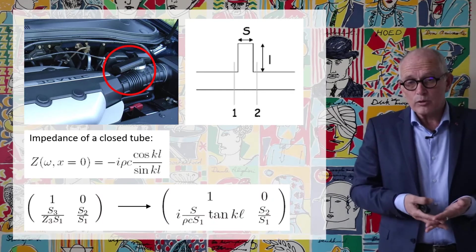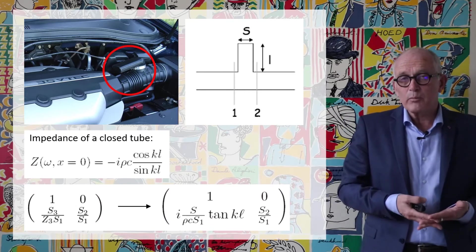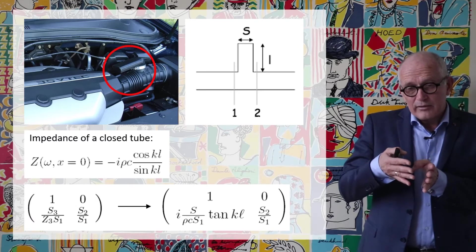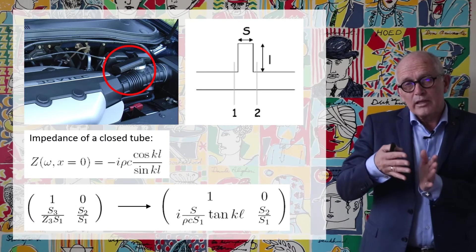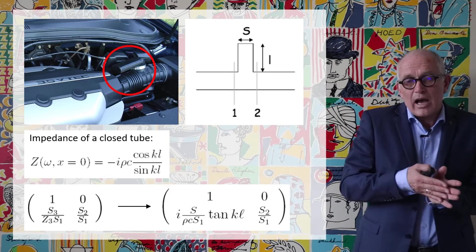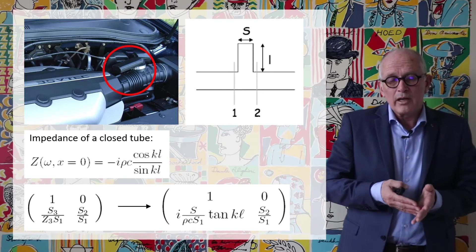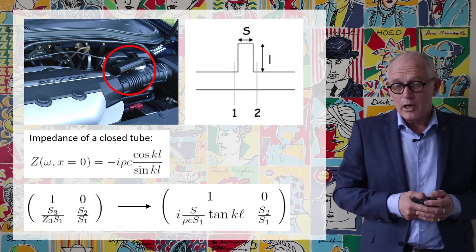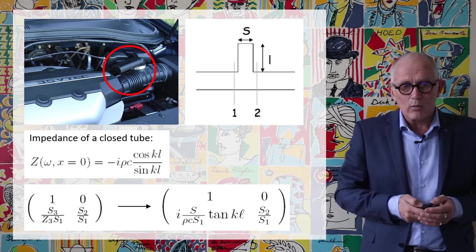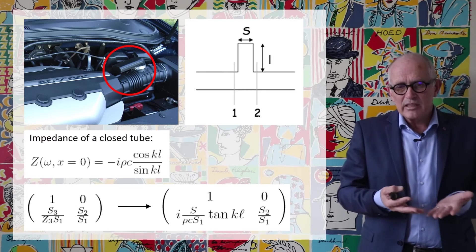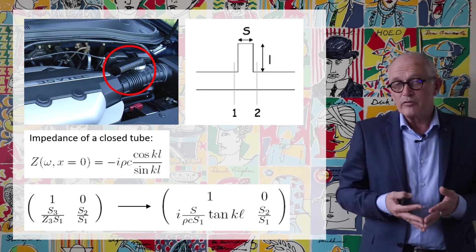So that the transfer matrix that connects the acoustic variable in the cross-section just before the acoustic resonator and just after the acoustic resonator is given by the expression that I'm showing now. And so it involves a tangent kL.